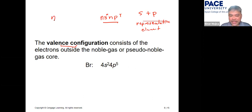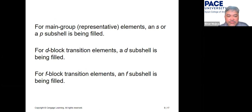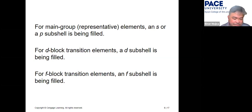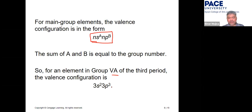For main group (representative) elements a d subshell is not being filled; for d-block transition elements a d subshell is being filled; and for f-block elements an f subshell is being filled. For main group elements the valence configuration is ns^a np^b, and a + b equals the group number — for group 5A it is ns² np³.